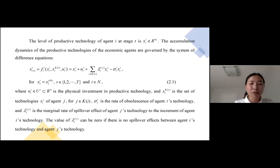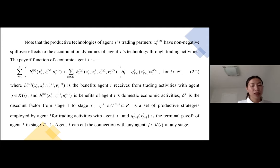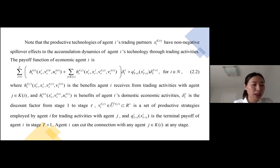From this equation, it is related to the physical investment in productive technology, and it is also related to the marginal rate of spillover effect. It is also related to the rate of obsolescence of agent I's technology. Lambda can be zero, but it should be positive and non-negative. Note that the productive technology of agent I's trading partner has non-negative spillover effects on the accumulation dynamics of agent I's technology through trading activities.